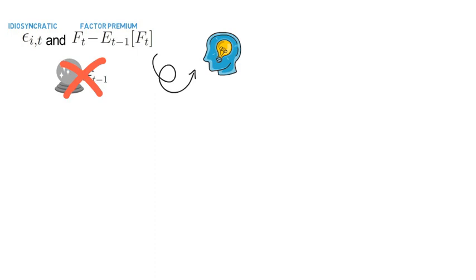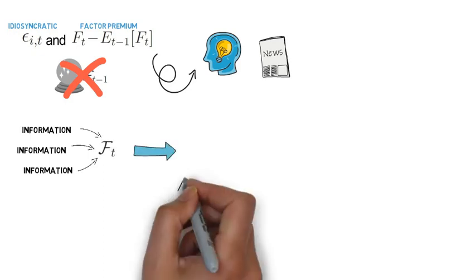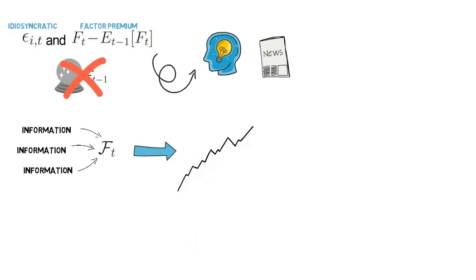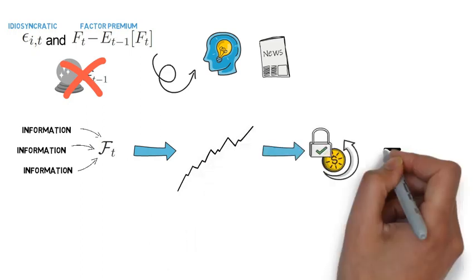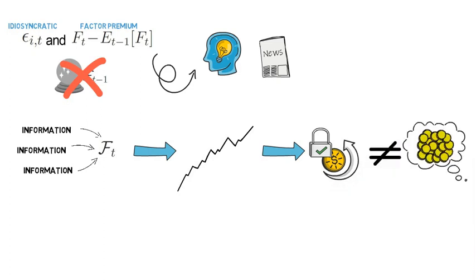So innovations are also called news, meaning that unforecastable information arrived at time t and asset markets reacted to that news immediately. And that's the reason why the realized returns differ from the expectations at time t minus 1.